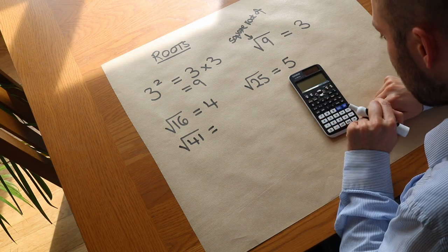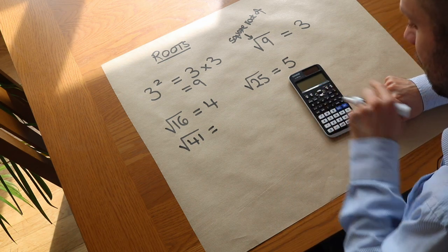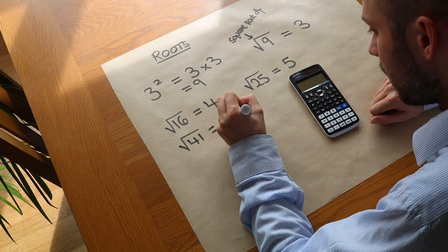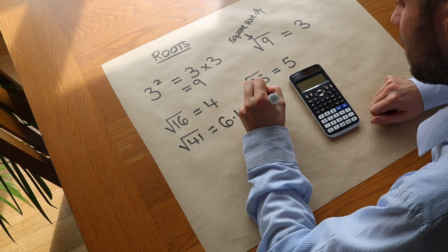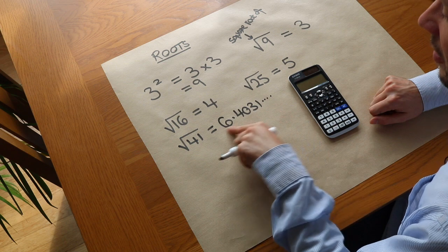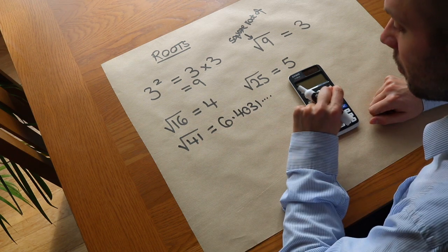But if I press the SD key, that converts it to a decimal. So we see it's going to be 6.4031 etc. That means if you do 6.4031 times by itself, that's going to give you 41.